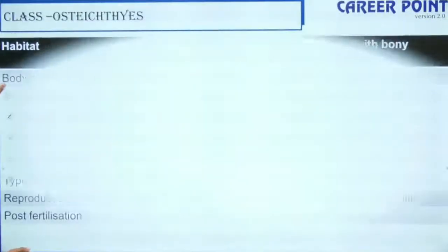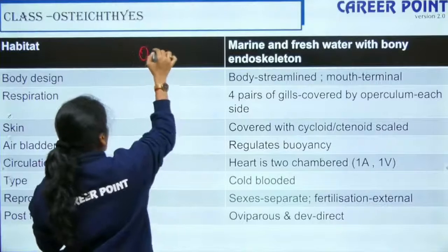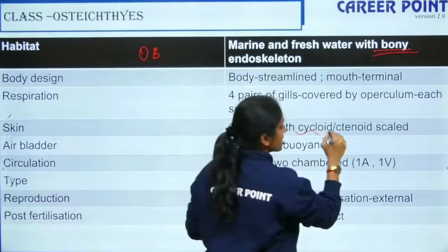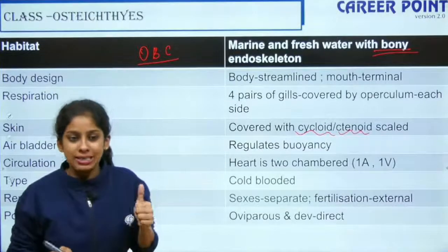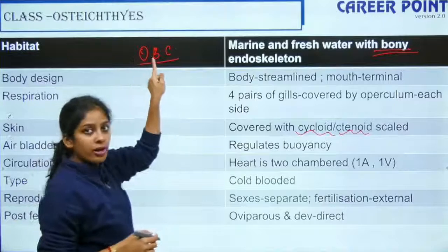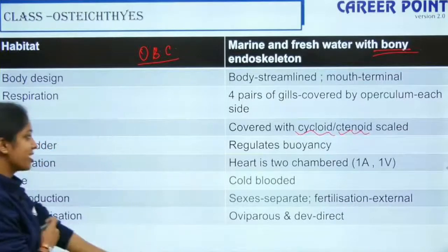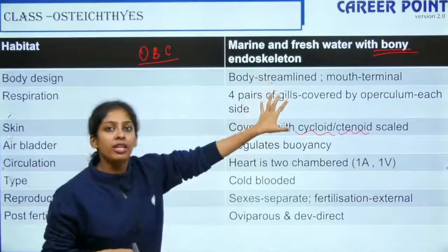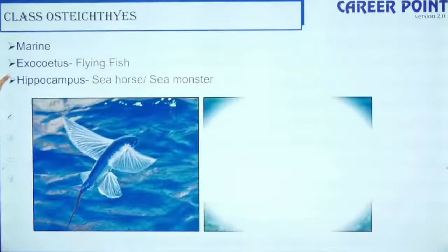The next class is Osteichthyes. Remember OBC: O for Osteichthyes, B for bony endoskeleton, C for cycloid or ctenoid scales. They have an air bladder to regulate buoyancy. They have a cover for their gills called the operculum. The edible fishes you eat are Osteichthyes — they can be found in aquariums or in marine water.